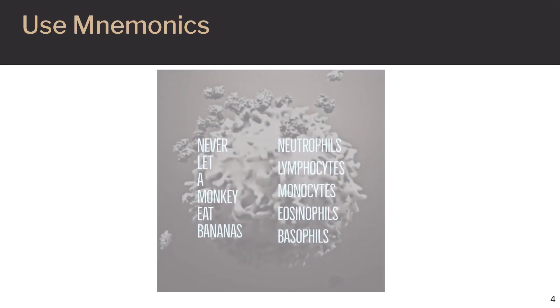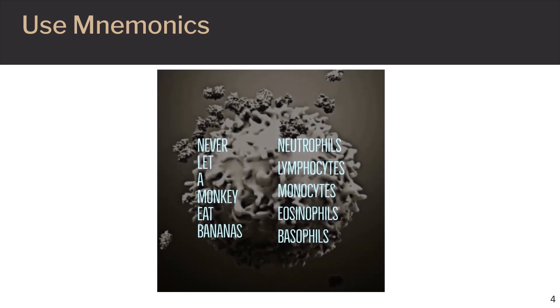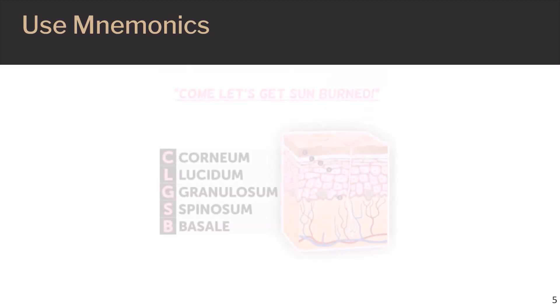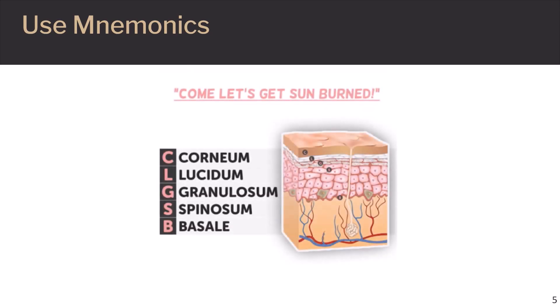Here is one to help remember the white blood cells from greatest to least in terms of numbers. Never let a monkey eat bananas equals neutrophils, lymphocytes, monocytes, eosinophils, and basophils. The mnemonic come, let's get sunburned, can help students remember the layers of the epidermis. This is in reference to the layers of the skin: the stratum corneum, the stratum lucidum, the stratum granulosum, stratum spinosum, and the stratum basale.